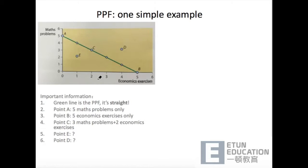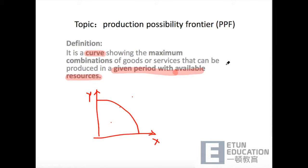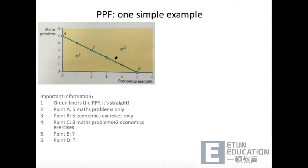这是从书中提取的一个非常简单的example。So first of all, the green line is our PPF。那我之前画的PPF是一条曲线，那怎么书中的例子变成直线了呢？So if the PPF is a straight line, then there is a constant opportunity cost between the two goods. 如果给你的PPF是直线，then there is a constant opportunity cost between the two goods。这是一个非常有用的信息，大家一定要记住。